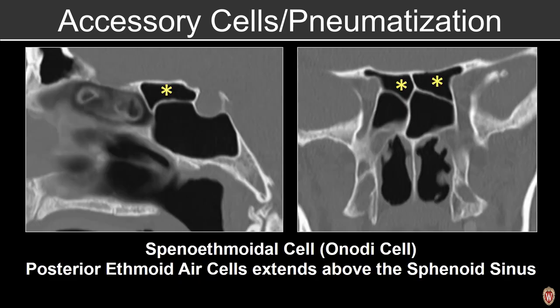This particular air cell is an important one to recognize — a posterior ethmoid air cell that extends above the sphenoid sinus. This is the sphenoethmoidal air cell, or the Onodi cell, and it's important to identify for our surgical colleagues as a potential surgical landmine.